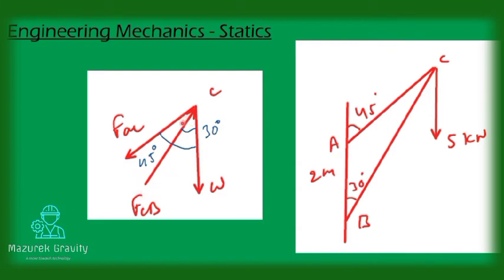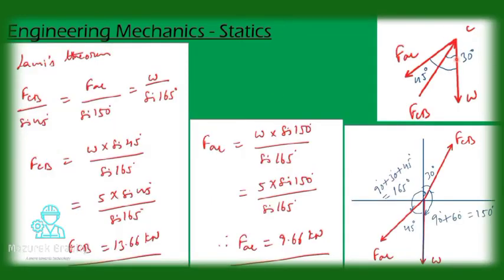Similarly, FAC is acting towards this direction and the angle between FAC and W is 45 degrees. The forces and reactions at C can be represented like this: W is acting downwards and FCB will be acting towards this direction.